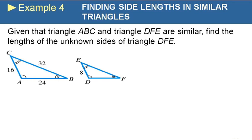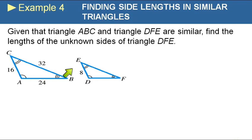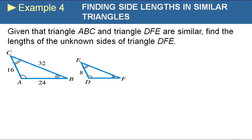For the second part, triangles ABC and DFE are similar — find the lengths of the unknown sides. Since the sides must be proportional, we can observe that side DE is half the size of side AC, so all sides of the larger triangle are twice those of the smaller. Side EF equals 16, and since AB is 24, DF equals 12. You can sometimes use common sense to do it like that.